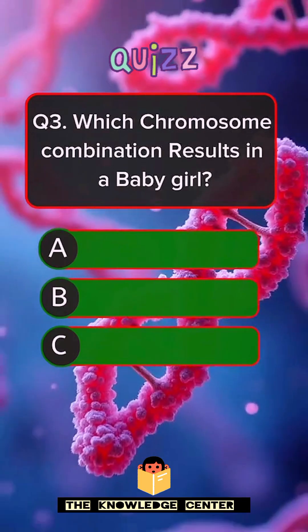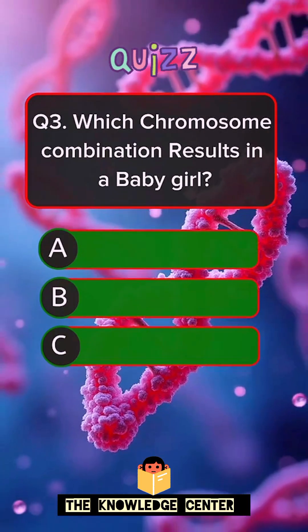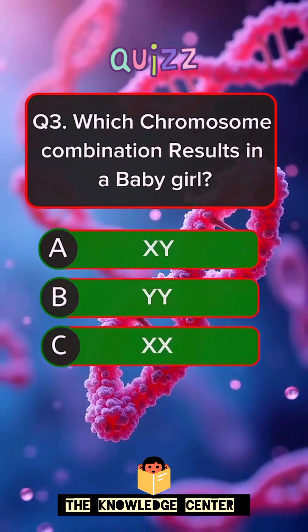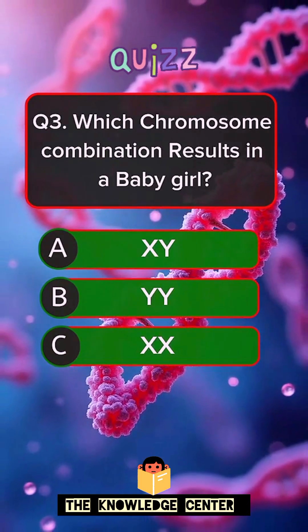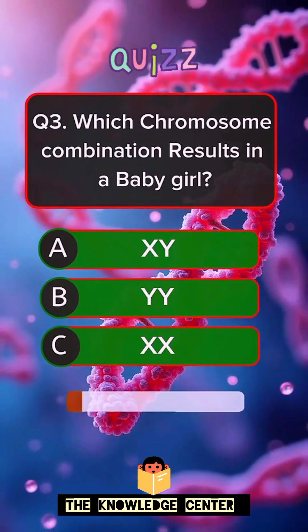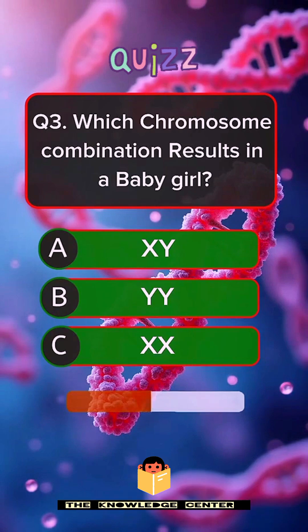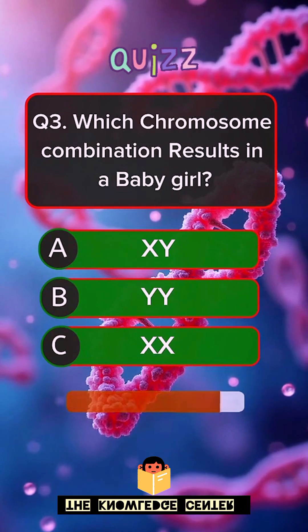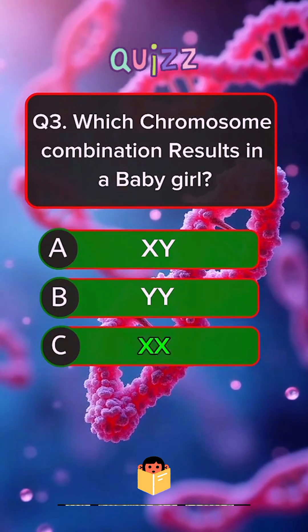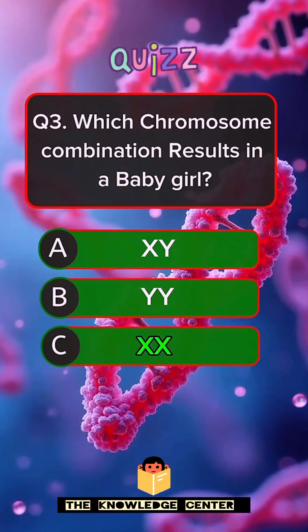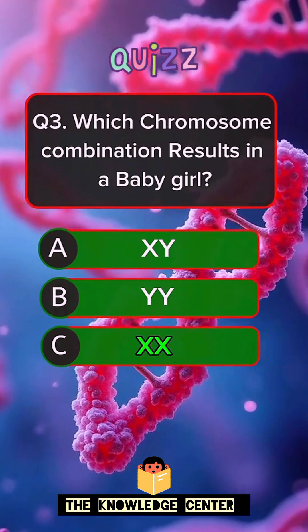Question 3. Which chromosome combination results in a baby girl? Answer C. XX.